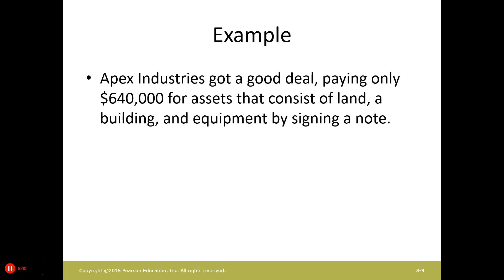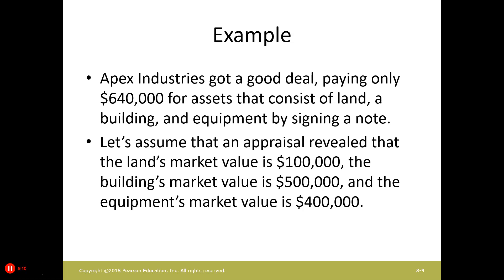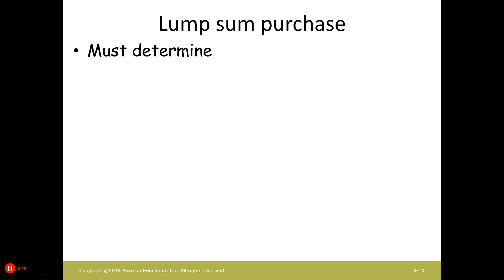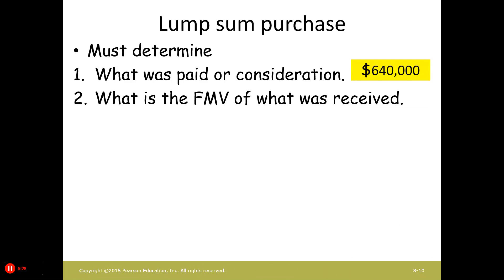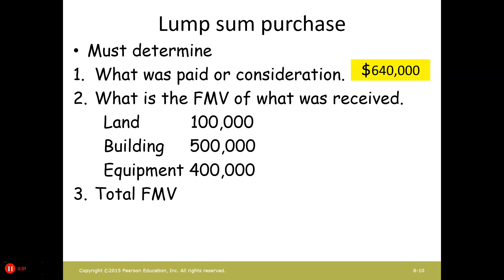Here's an example. We bought land, a building, and equipment for $640,000. However, they have an appraised value of $100,000 for the land, $500,000 for the building, and $400,000 for the equipment. So we first determine what was paid — the consideration — which is $640,000. The fair market value totals $1,000,000, which is greater than the consideration. So that means we have to prorate it.